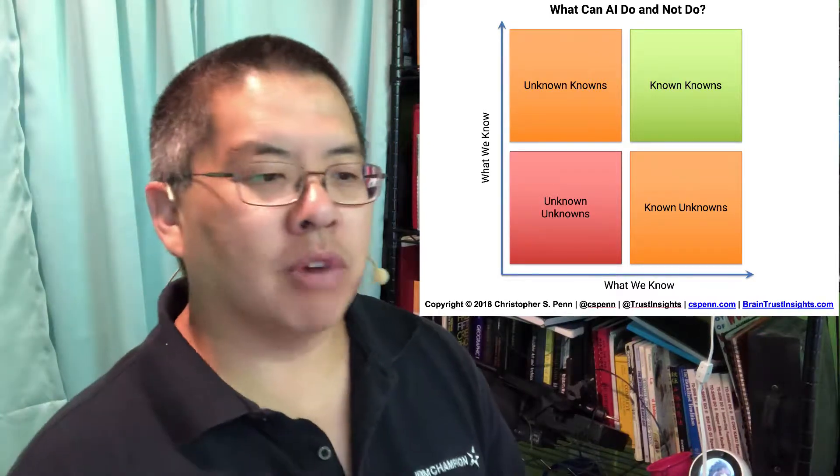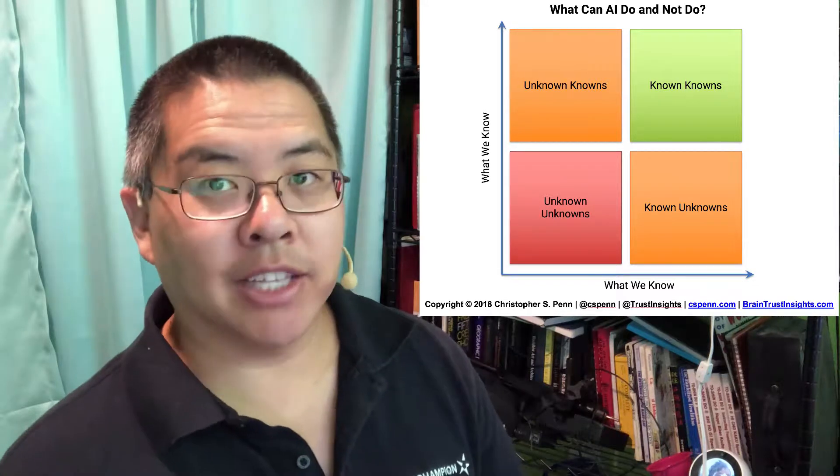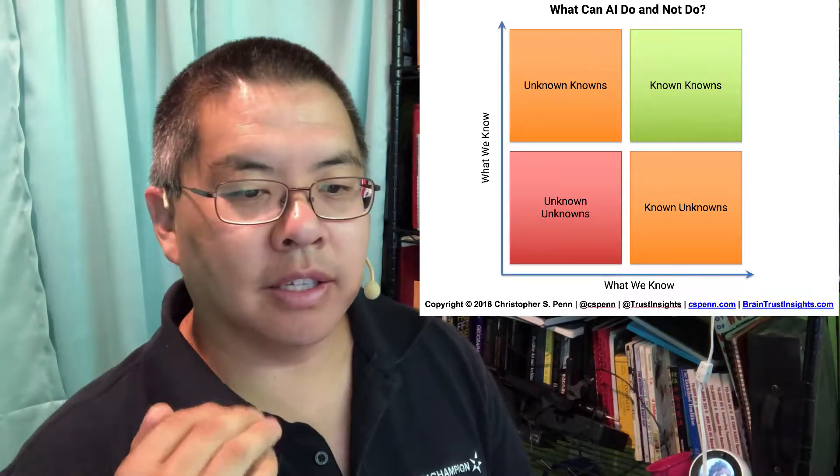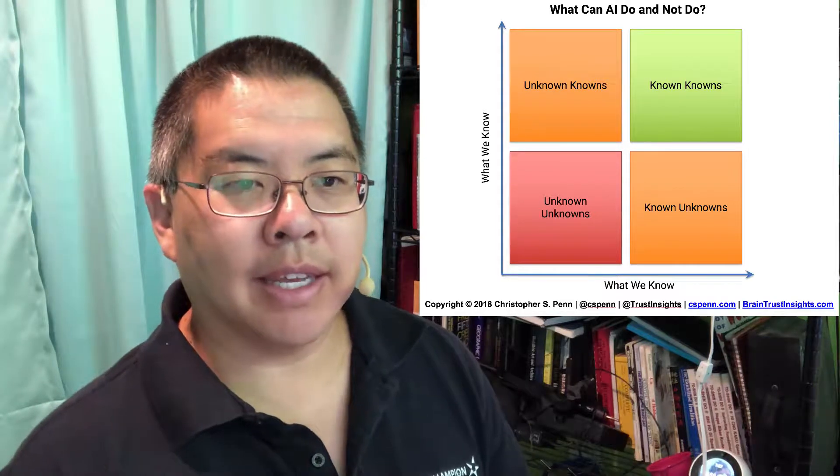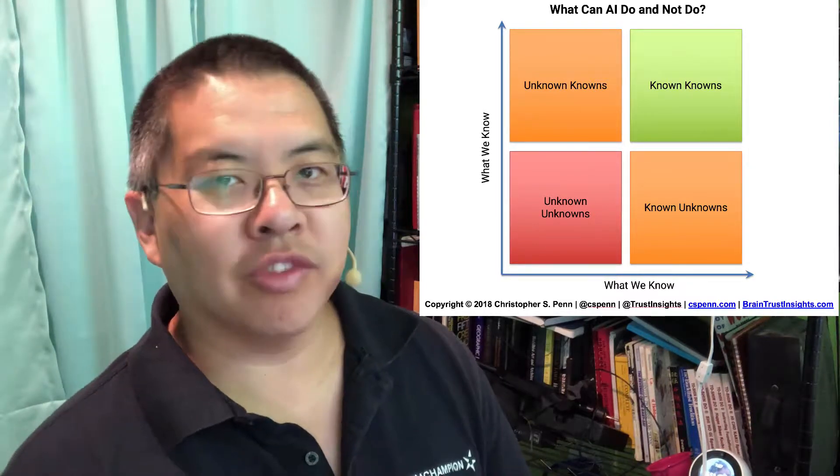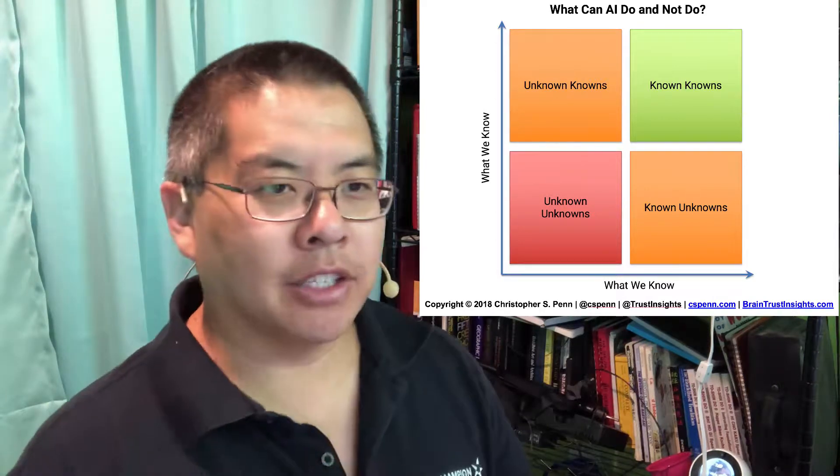Known knowns are problems to which we know we have the answers, we know how to get the answers. And what we're looking for is not the answer - we're looking for how to get the answer better or faster or have something else do it. Again, this is the sweet spot of AI, the three A's.